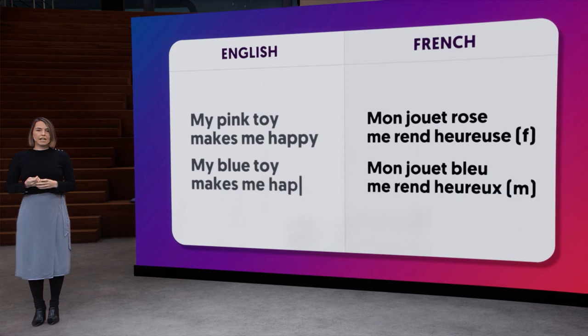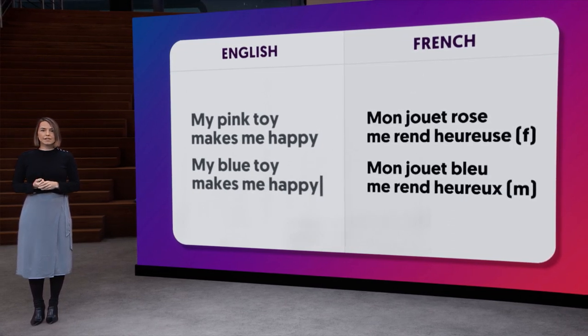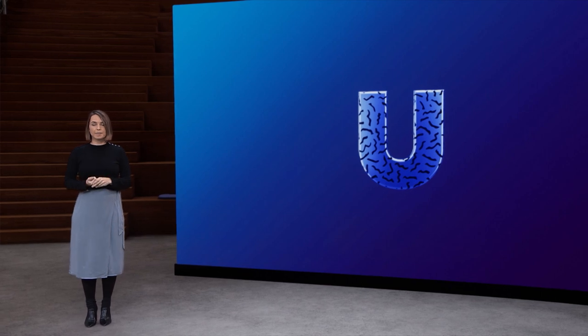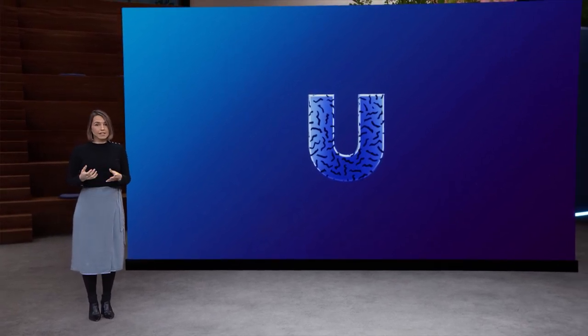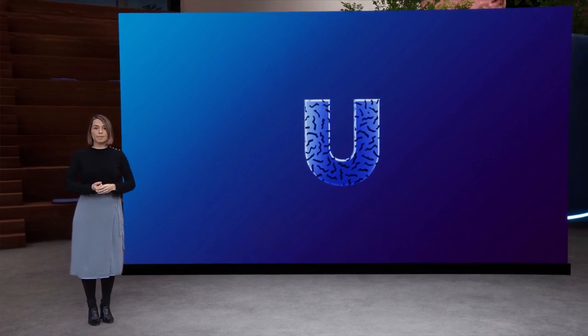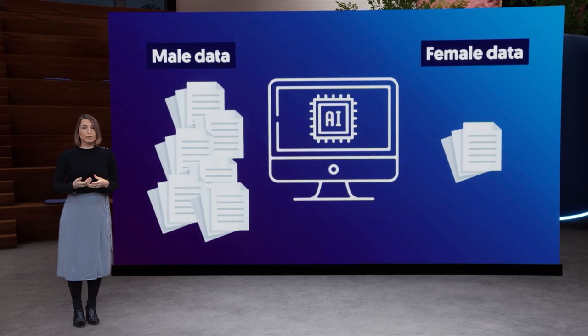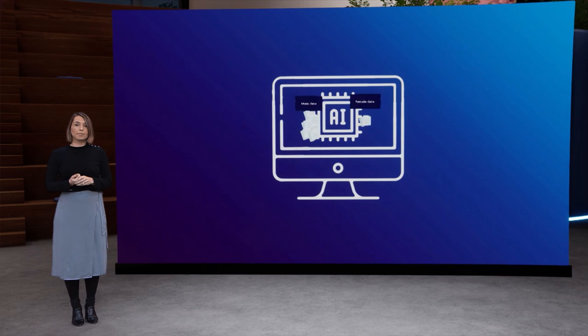Now, to understand why machines — or actually the AI behind them — show these kinds of biases, we need to look at where the information comes from. Tools like Google Translate make use of artificial intelligence algorithms to translate sentences. The AI tool is trained with loads and loads of information, which we refer to as big data. For machine translation, for example, that data would consist of billions of parallel sentences, for instance from English to French. The data used to train the machines is, however, not necessarily representative of our society. First of all, we often see that there is simply more data for men, so the algorithm will be trained more on male data, resulting in male-biased outcomes.